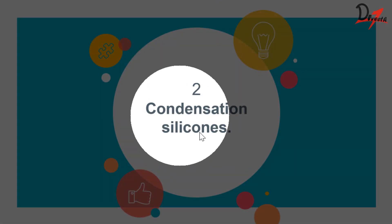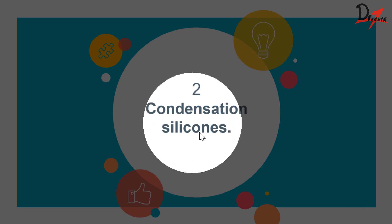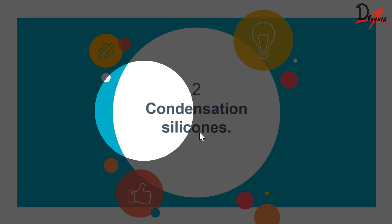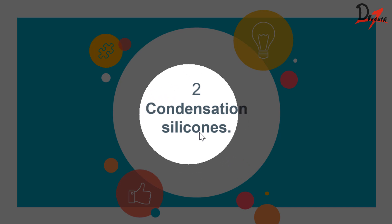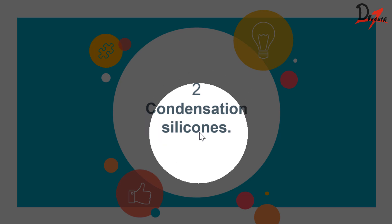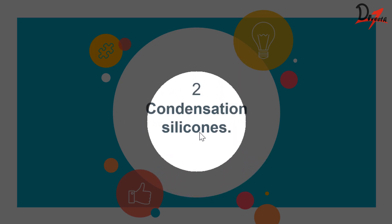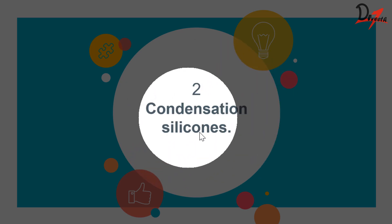Today we are going to discuss about condensation silicones. In the previous video we studied polysulfides, which had a lot of problems — staining of clothes, bad odor, long setting time, somewhat high shrinkage in setting, and high permanent deformation. So we needed a better material, and due to that need we developed the silicones.